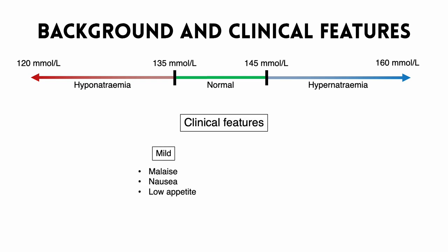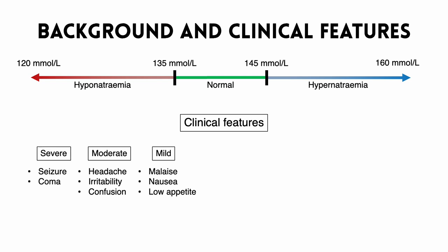Firstly, thinking about hyponatremia, symptoms of mild hyponatremia include general malaise, which is feeling unwell, nausea, and low appetite. Symptoms of moderate hyponatremia — talking about that 125 to 130 millimoles per litre range — include headache, being more irritable than usual, and some confusion. Then finally, symptoms of severe hyponatremia, which are uncommon but important to know about, include seizures and reduced consciousness, including coma.